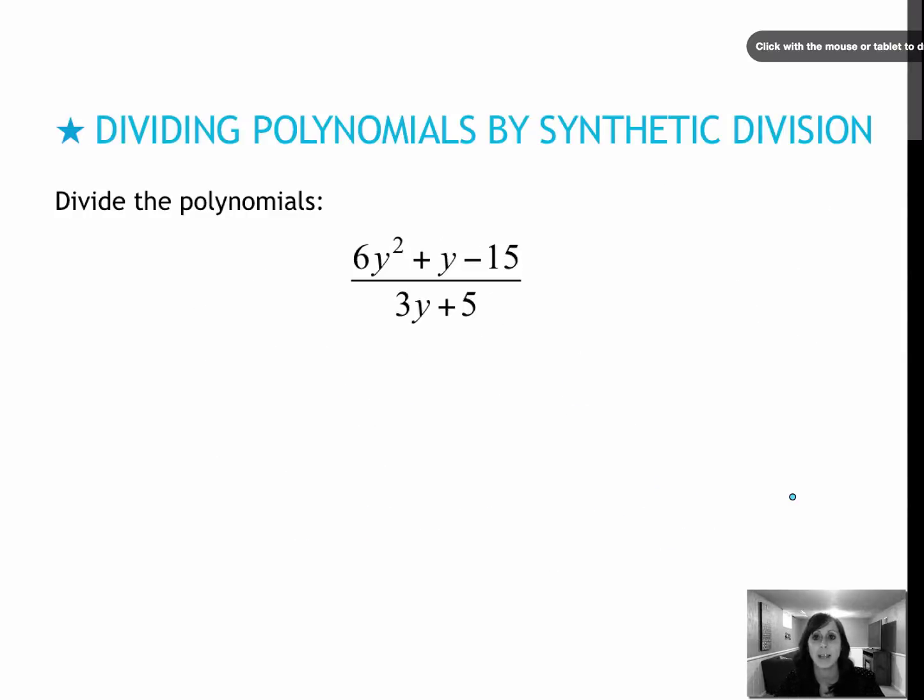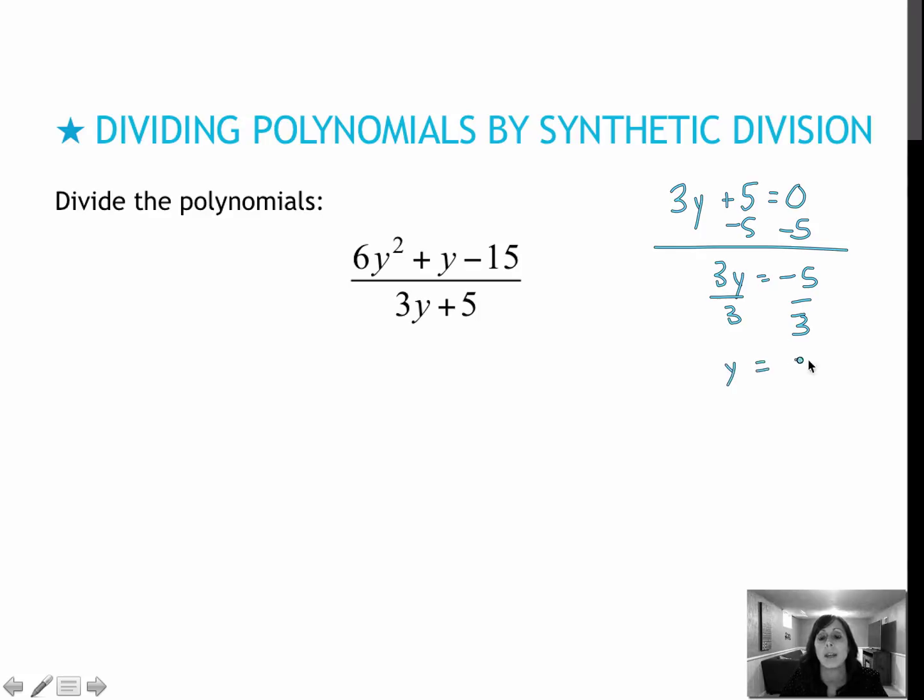And this last one, again, try it on your own, then press play to see how you did. For this one, again, I will have to deal with fractions, so it's kind of a judgment call if you prefer to do synthetic or long division on most of these questions. If I set that equal to 0, I'm going to be dealing with negative 5 thirds as the value inside the box, which means I'm going to have to multiply by that fraction.